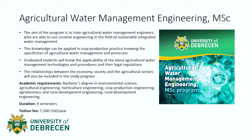Next is the agricultural water management engineering program. The aim is to train agricultural water management engineers able to use creative engineering in the field of sustainable integrated water management. This knowledge can be applied in crop production practice, knowing the specificities of agricultural water management and processes. Graduate students will know the applicability of the latest agricultural water management technologies, procedures, and their legal regulations. The relationships between the economy, society, and the agricultural sectors will also be included. Academic requirements are a bachelor's degree in environmental science, agricultural engineering, horticulture engineering, and so on. The duration is four semesters, and the tuition fee is $7,500 US dollars per year.